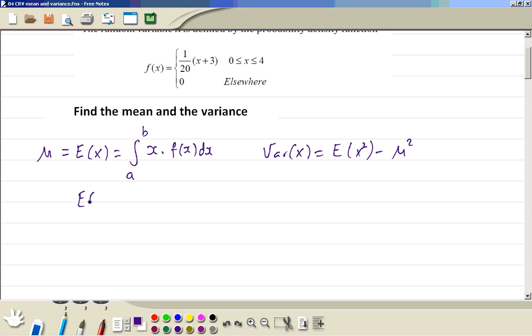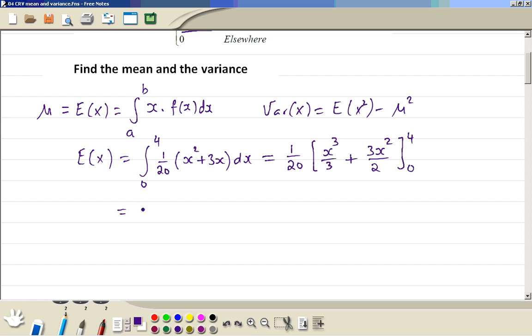So put the limits 0 to 4. Now we're going to multiply this function by x, so we will get 1 over 20 then the bracket. We multiplied by x, we get x squared plus 3x. Now we integrate, so 1 over 20, x cubed divided by 3, and here we get 3 x squared divided by 2, of the limits.